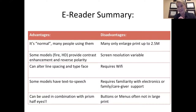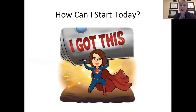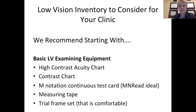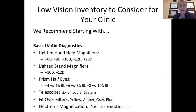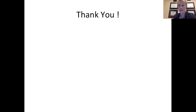To start practicing low vision, recommended equipment includes a LogMAR acuity chart, a contrast chart, an M-notation continuous reading card, a measuring tape to record holding distances, a trial frame set, handheld magnifiers, stand magnifiers, prism half eyes, and an electronic magnifier. The next lecture on February 22nd will cover telescopes and filters in more detail.